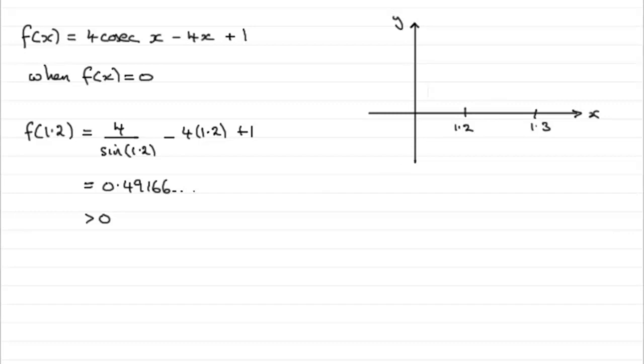So we could expect the graph of f of x at 1.2 to be above the x axis. Let's just say it's there.